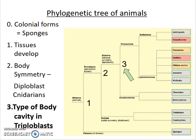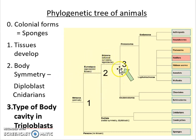We saw that the original kinds of animals were these colonial forms of cells, and the modern descendants of those are the sponges we see today. Some of those animals developed the ability to form tissues with specialized function through the process of embryogenesis. During embryogenesis, some body symmetry begins to develop, and we look at the example of the diploblasts in the phylum Cnidaria.